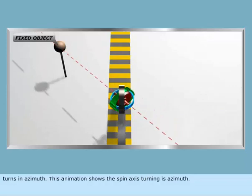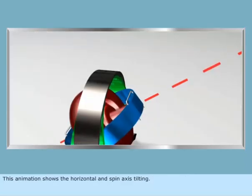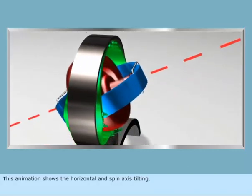This animation shows the spin axis turning in azimuth. This animation shows the horizontal and spin axis tilting.